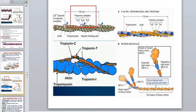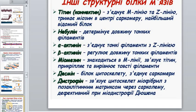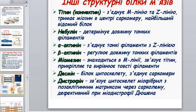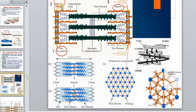The troponin molecules together are called the troponin complex. Besides the sarcomere proteins involved in contraction, there are also additional structural proteins whose main function is to form the structure of the sarcomere. These include titin, nebulin, and desmin. The slide shows where these protein molecules connect with the different parts of the sarcomere.